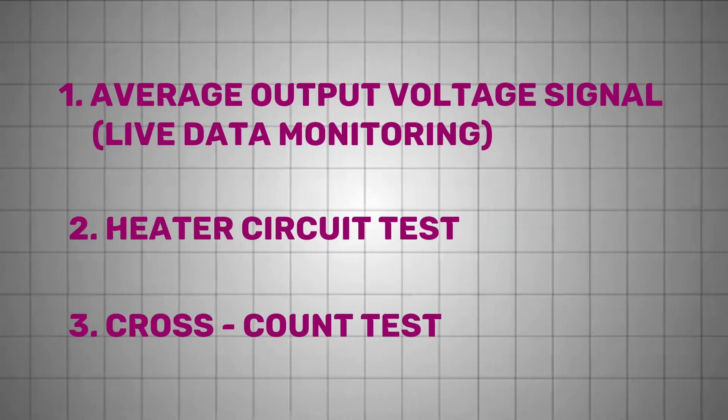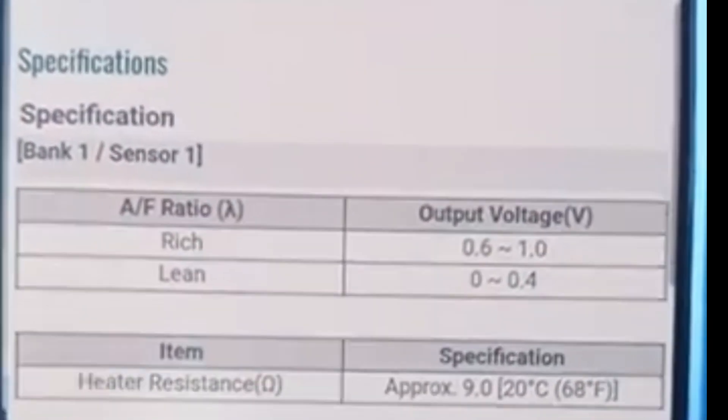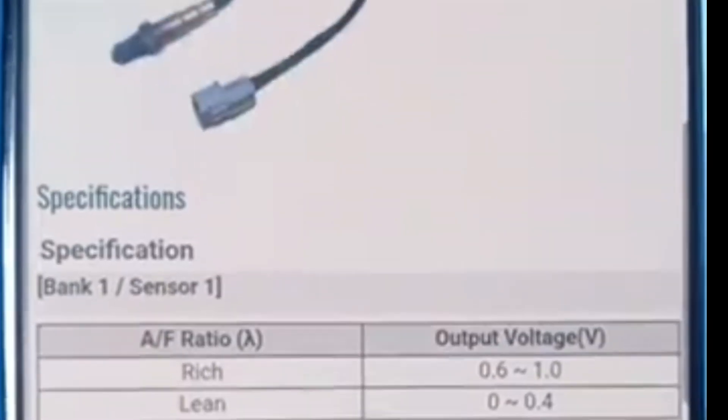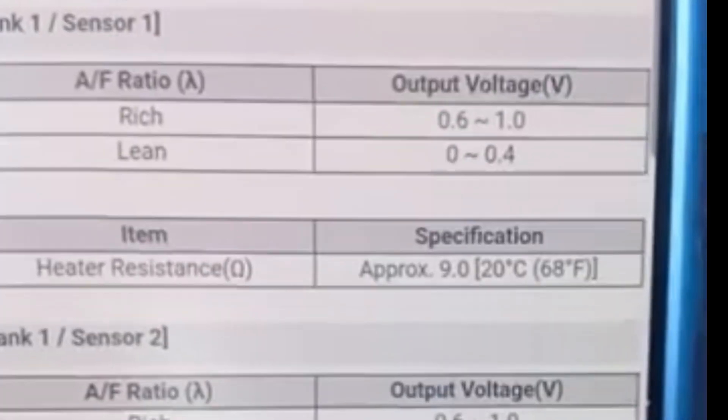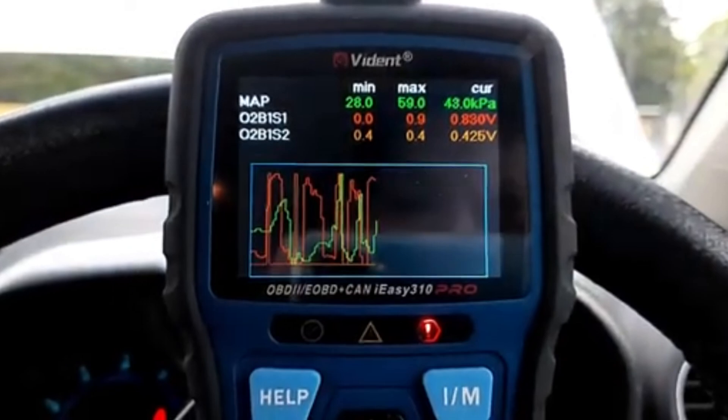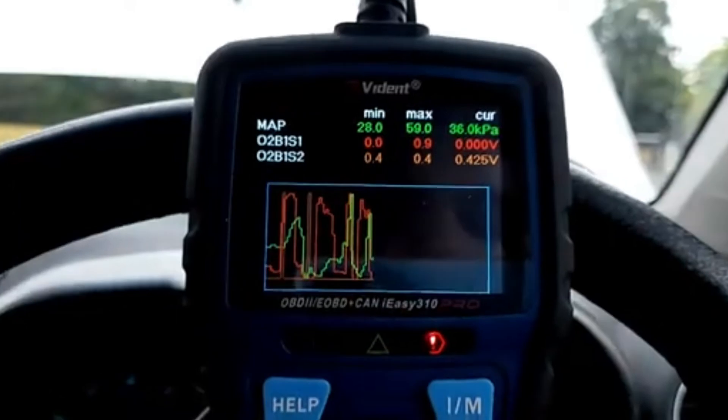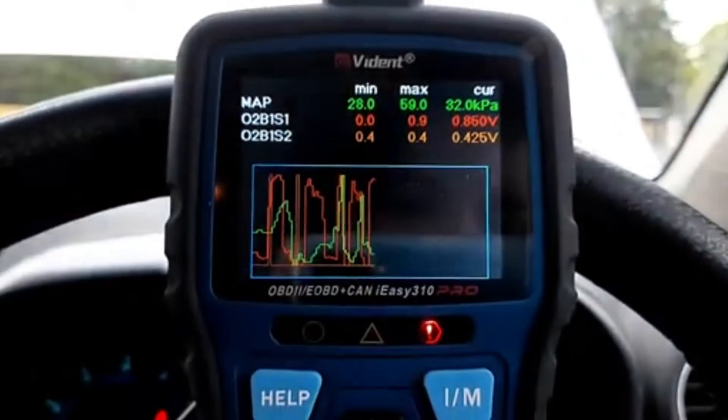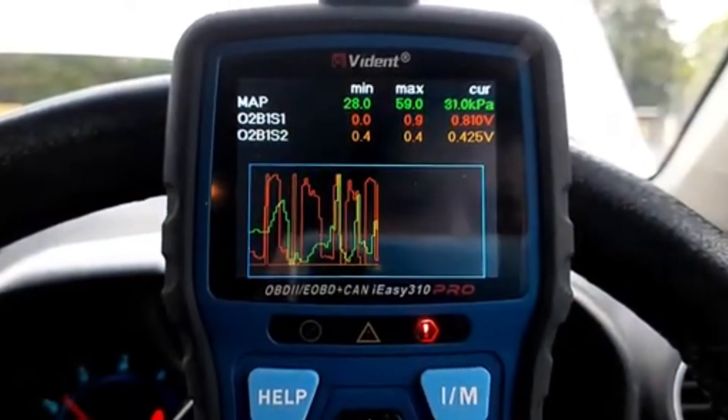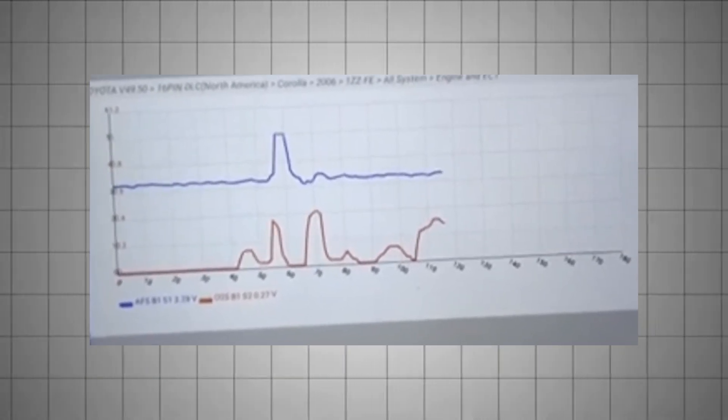Another powerful diagnostic method is the cross-counts test. This test is designed to measure how often the upstream oxygen sensor switches from rich to lean in a given time period. For this, you'll need either a scan tool with graphing capabilities, an oscilloscope, or a specialized tool like the ST05 oxygen sensor tester. In a healthy sensor, you should see several cross-counts per second when the engine is fully warmed up and running at a steady RPM.